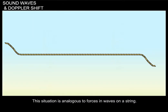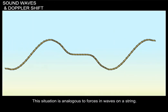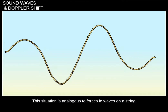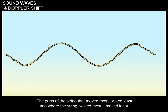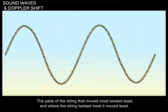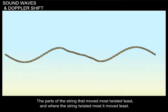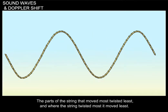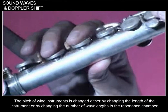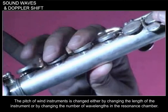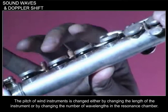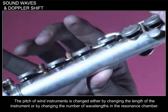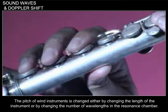This situation is analogous to forces in waves on a string. The parts of the string that moved most twisted least, and where the string twisted most, it moved least. The pitch of wind instruments is changed either by changing the length of the instrument, or by changing the number of wavelengths in the resonance chamber.